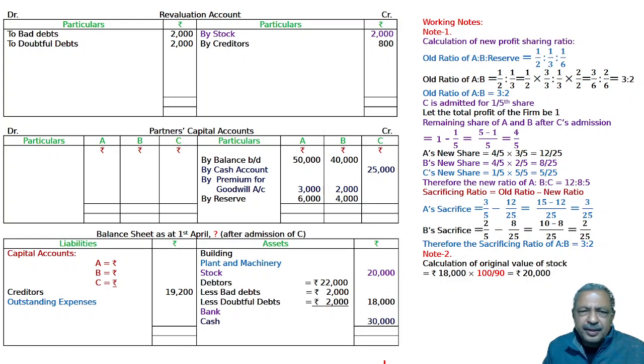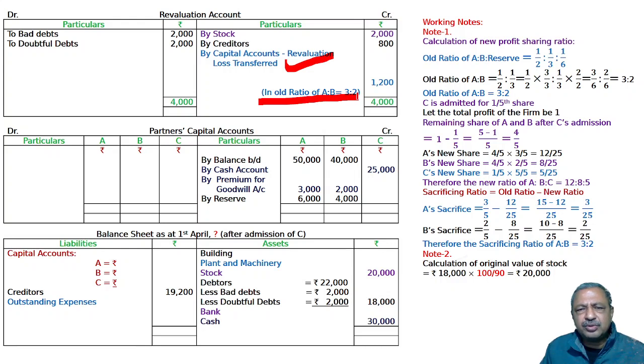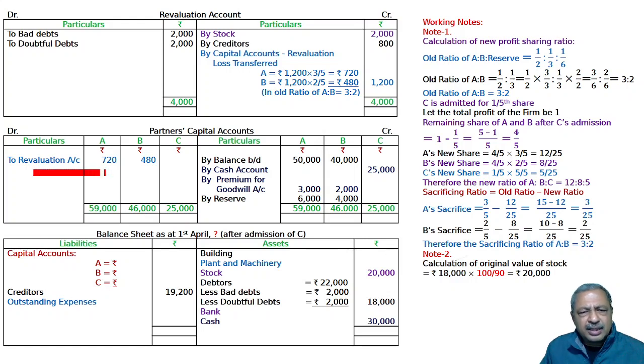Then you are required to prepare revaluation account. Now revaluation account total. Credit side is small, debit side is big, 4000. This is credit side, you need to balance it by 800. By capital accounts, the revaluation loss is transferred in old ratio of A to B, 3 is to 2. A is 3 by 5, B is 2 by 5. 3 by 5 of 1200 is 720, 2 by 5 is 480. And credit side total, debit side is equal. To balance carried down is equal, and this 3 is equal. Credit side is equal, and final column is equal.